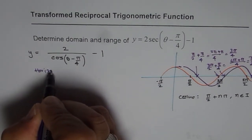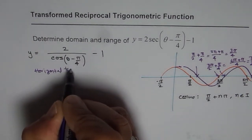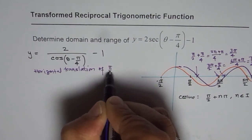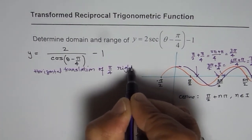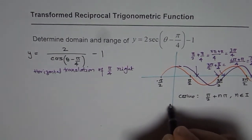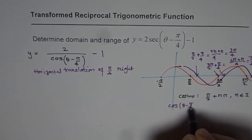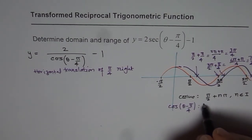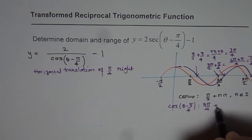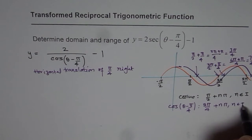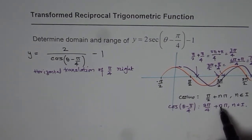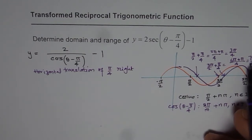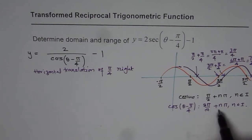So we have horizontal translation of pi by 4 to the right. So now for cosine of theta minus pi by 4, the zeros will be at 3 pi by 4 plus n pi, where n belongs to integers. If n is 1, we will get 7 pi by 4. n could be minus 1 or minus 2. So that is the general expression.